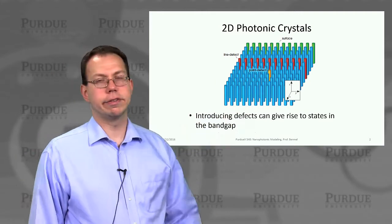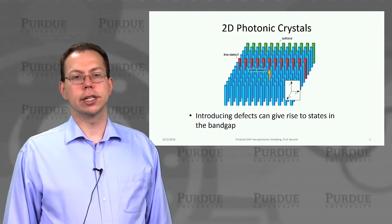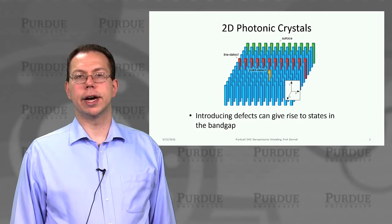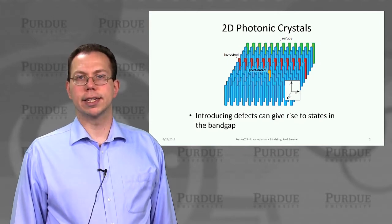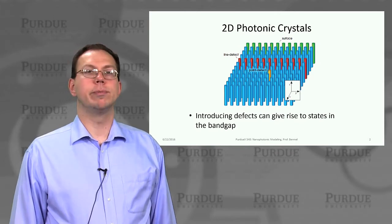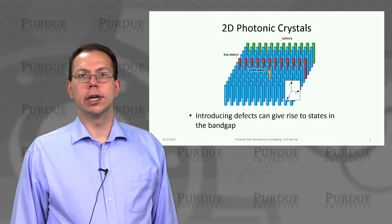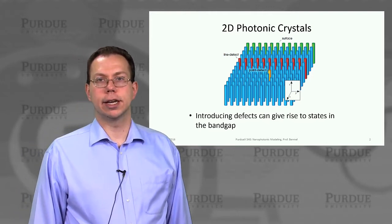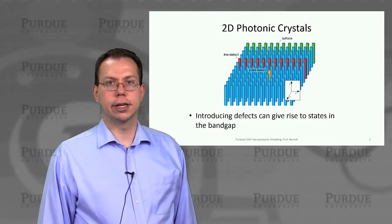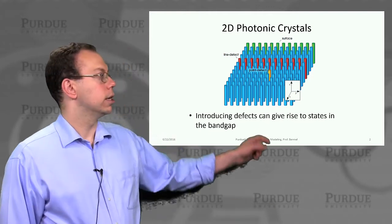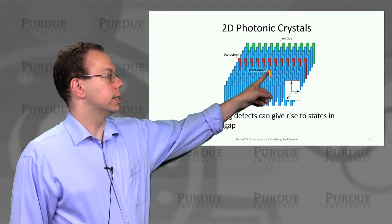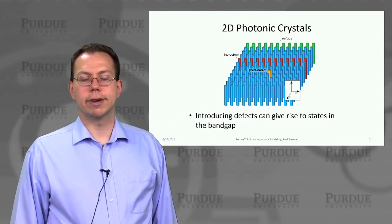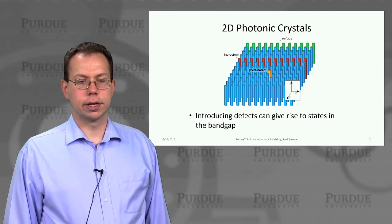The first kind of defect is a point defect. This usually would correspond to either removing one of the rods if you have a lattice of rods, or changing the size, or maybe even just changing the dielectric constant. So maybe all of these are gallium arsenide, and this one is aluminum gallium arsenide with a slightly lower refractive index.